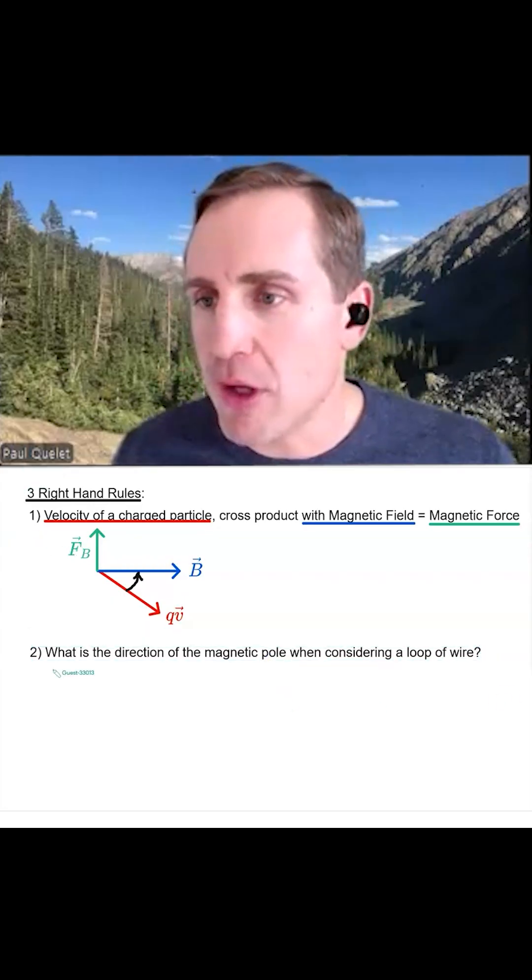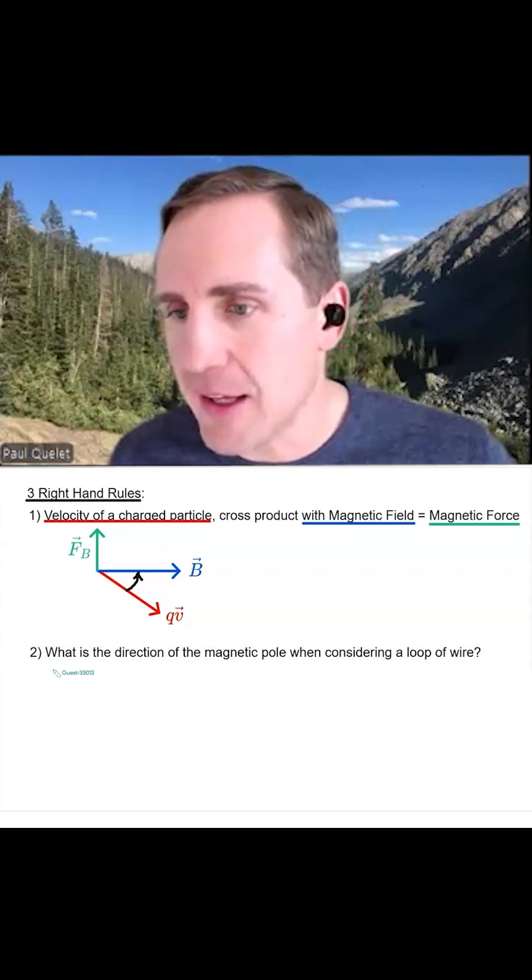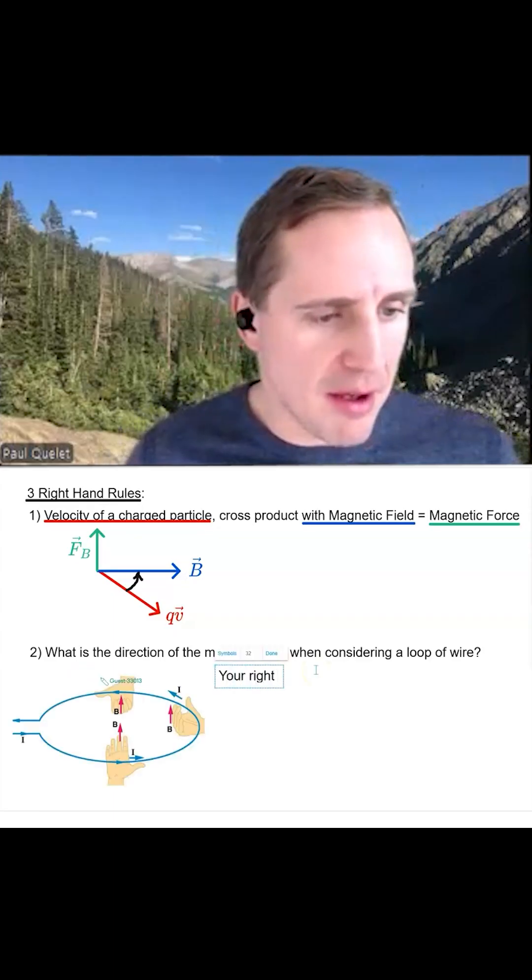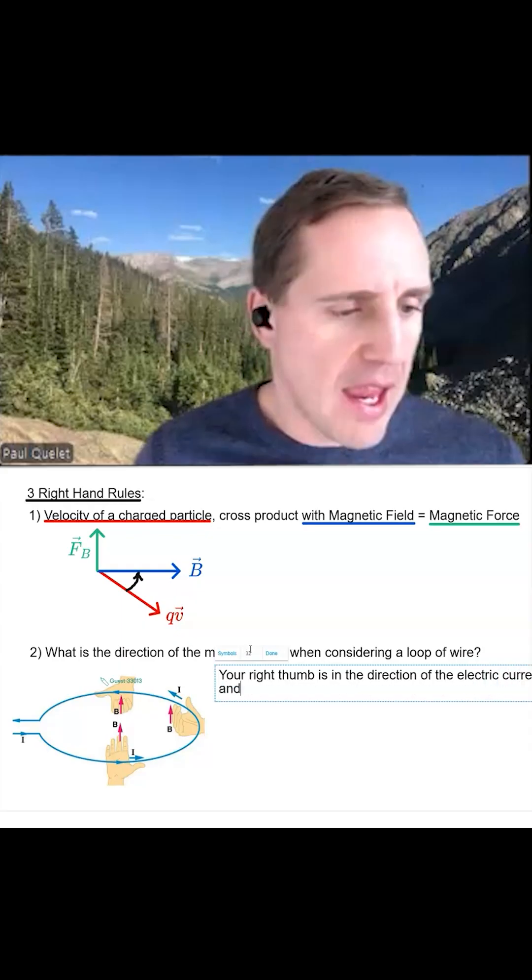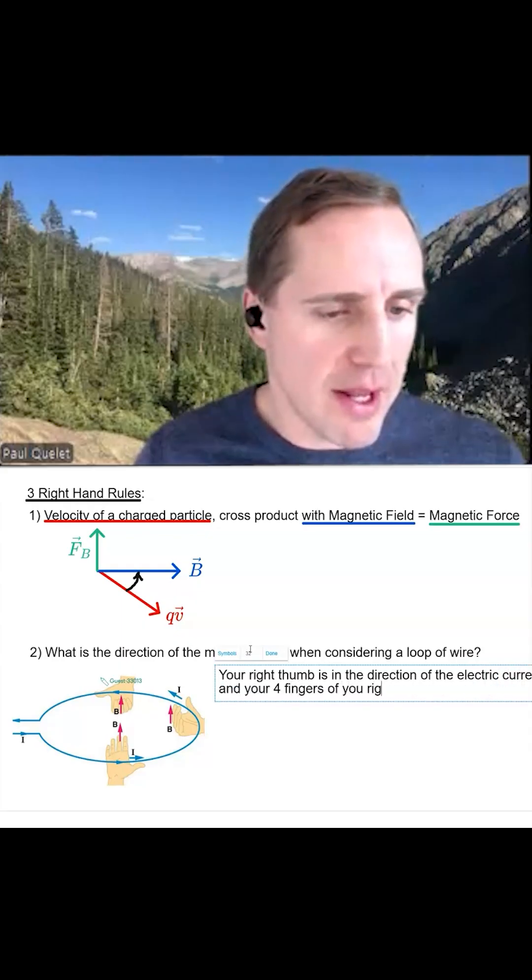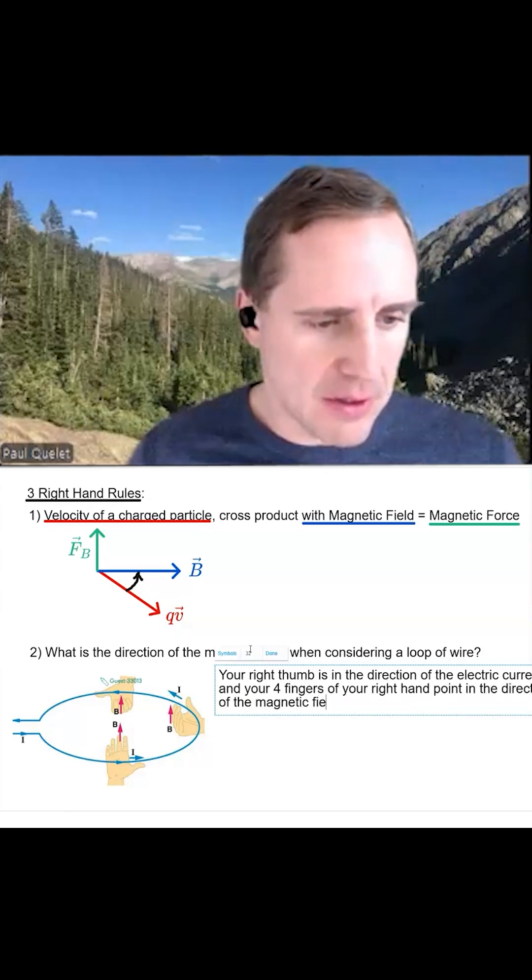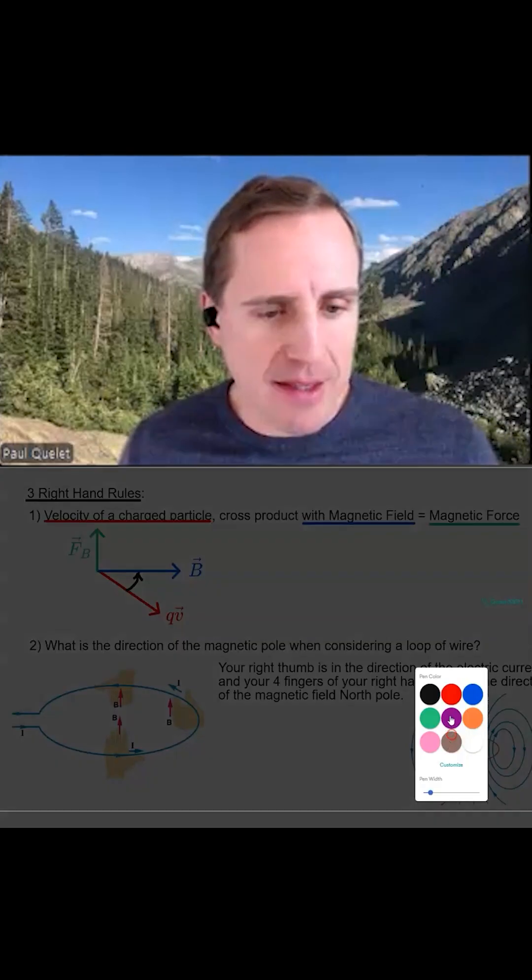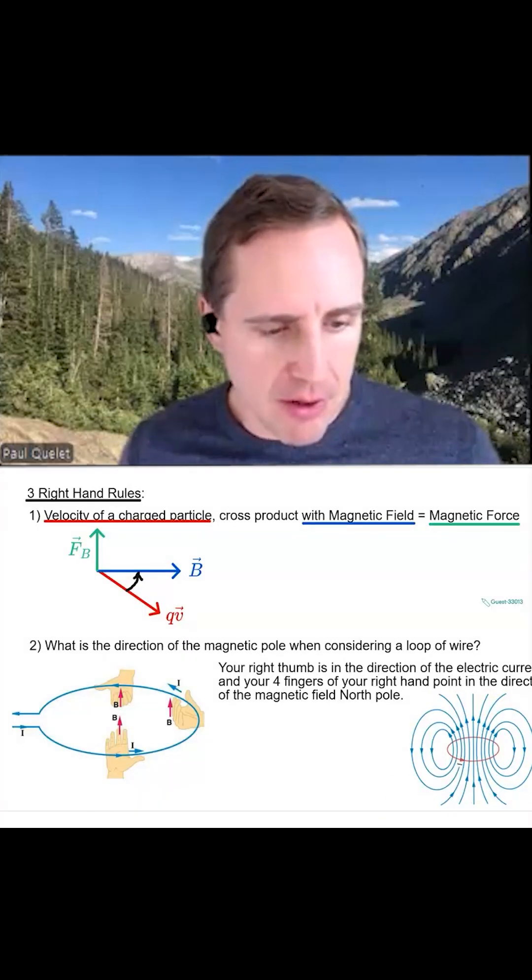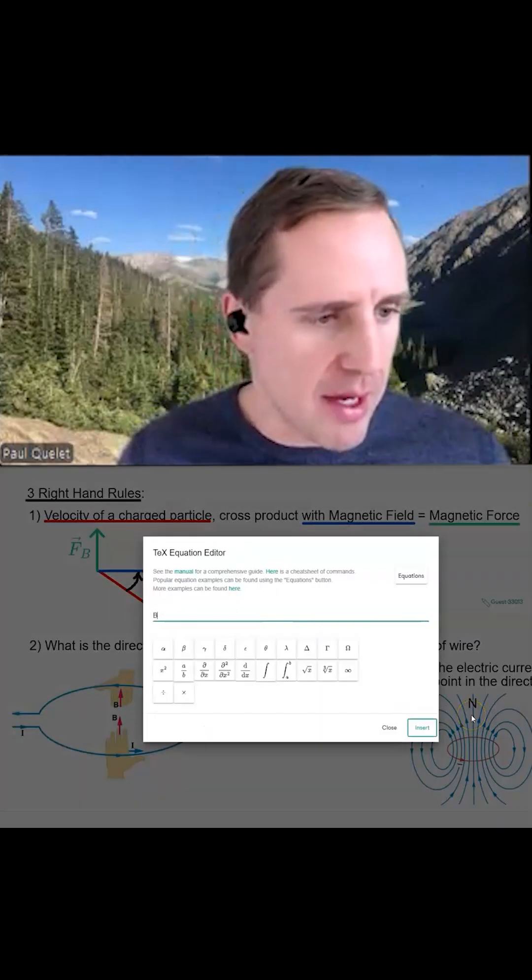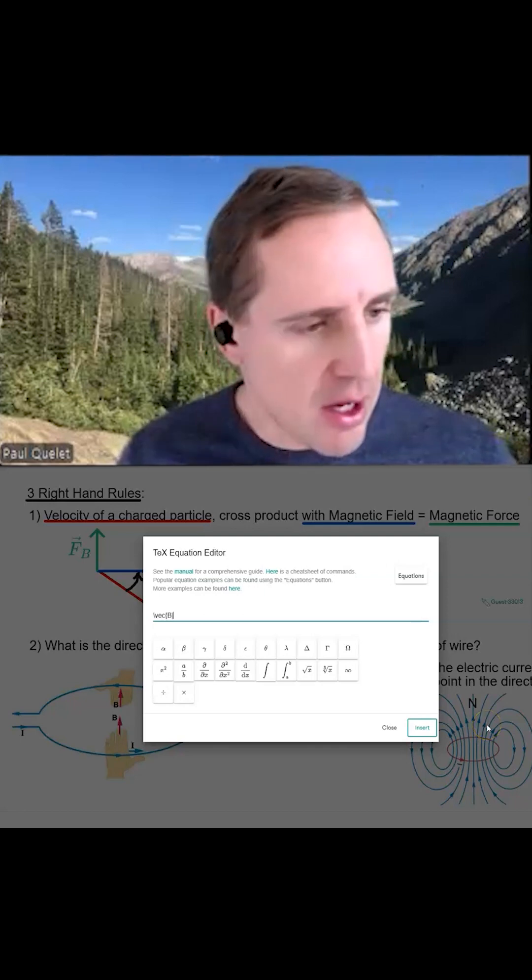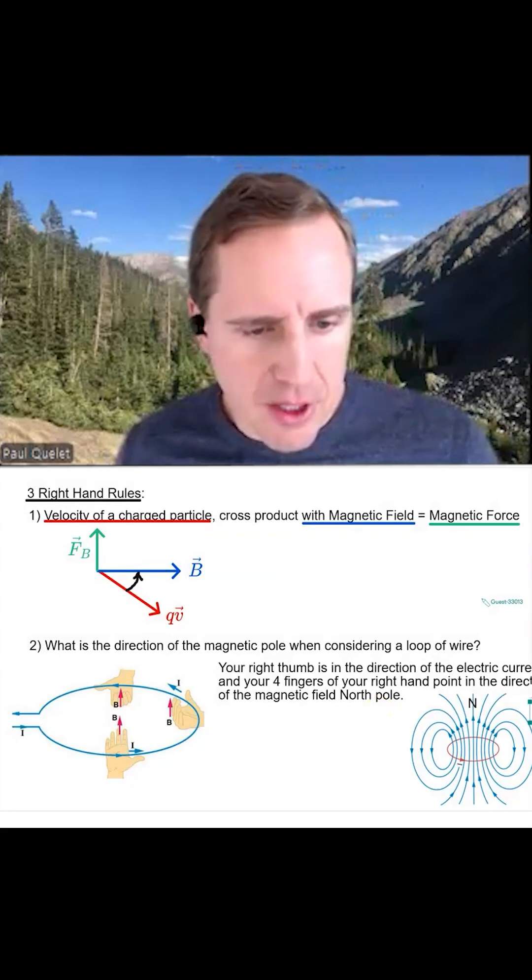So for the second right hand rule, it's going to basically work itself out like this. Your right thumb is in the direction of the electric current and your four fingers of your right hand point in the direction of the magnetic field north pole. So you see the magnetic north pole is up here. And then the magnetic field lines are going to be coming out of the loop like so.